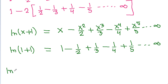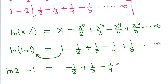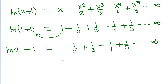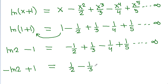So ln(2) = 1 - 1/2 + 1/3 - 1/4 + 1/5 up to infinity, which means 1/2 - 1/3 + 1/4 - 1/5 up to infinity = -ln(2) + 1. Multiplying both sides by -1 gives: 1/2 - 1/3 + 1/4 - 1/5 up to infinity = 1 - ln(2).